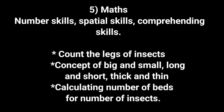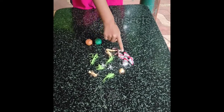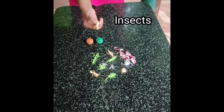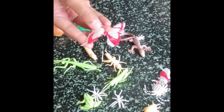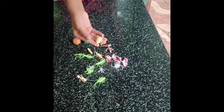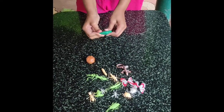Our fifth and last concept is Maths. In Maths we learn number skills, spatial skills, and comprehending skills. Count the legs of insects, concept of big and small, long and short, thick and thin, calculating number of beds for number of insects.